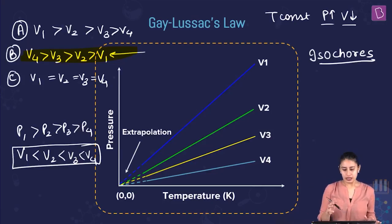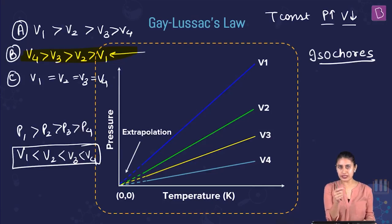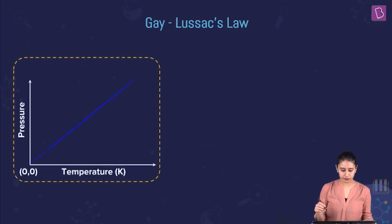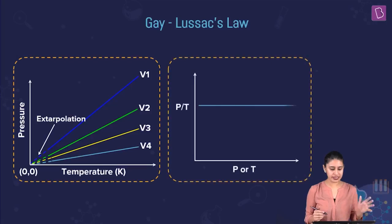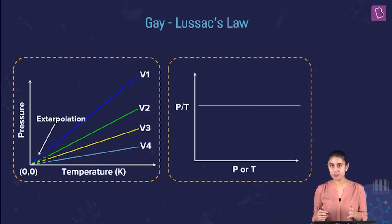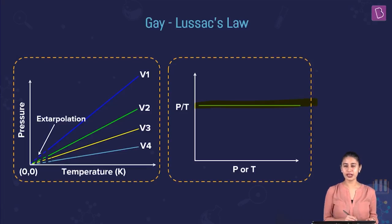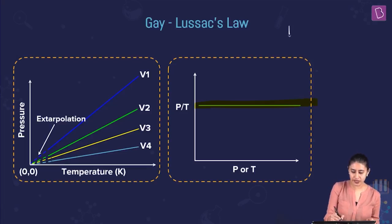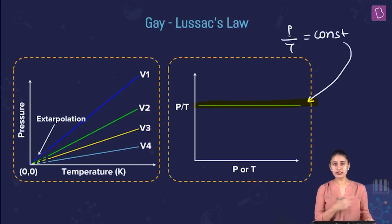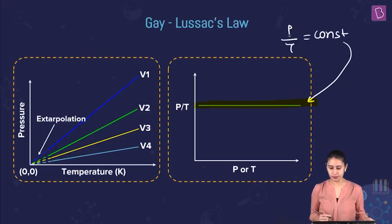Now, Gay-Lussac's law: volume constant, as we increase the temperature the pressure increases or vice versa. If I simply plot P/T versus P or T, what do we observe? It is a straight line parallel to the x-axis, signifying simply that P/T equals a constant — it does not depend on pressure or temperature.